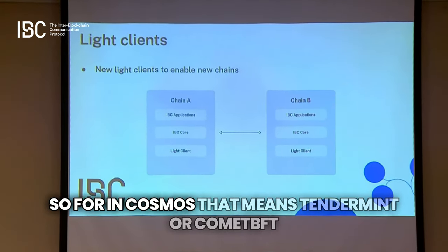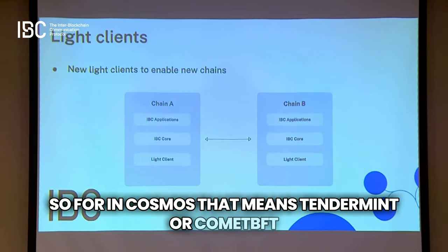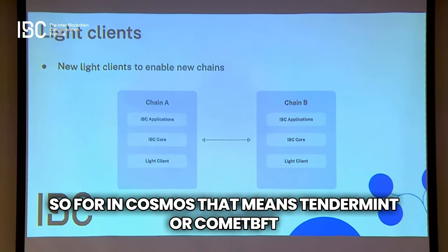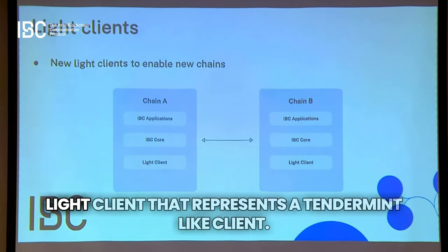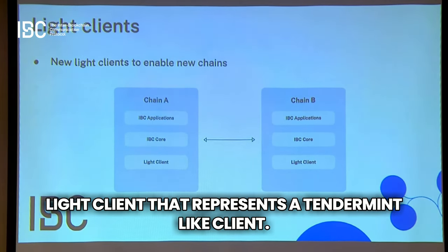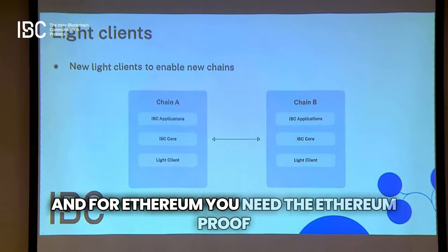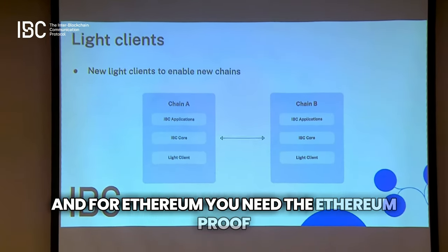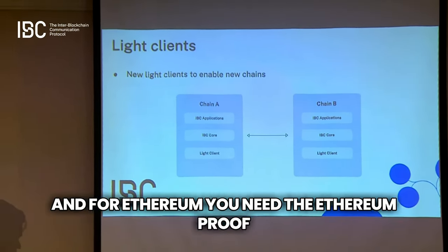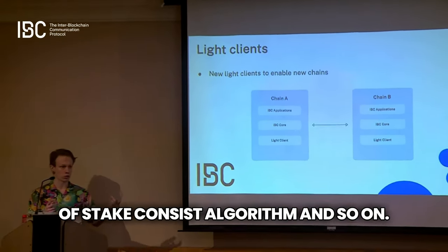In Cosmos that means a Tendermint or CometBFT light client that represents a CometBFT chain. And for Ethereum, you need the Ethereum proof-of-stake consensus algorithm, and so on. There are multiple ones, and it becomes more interesting — or difficult — when it's rollups and layer twos.